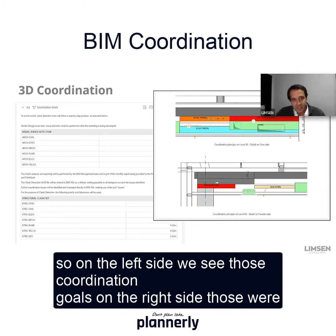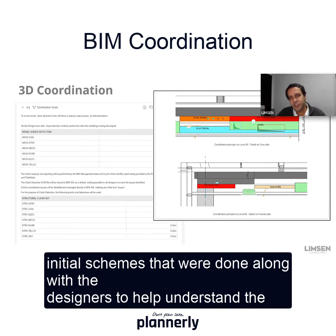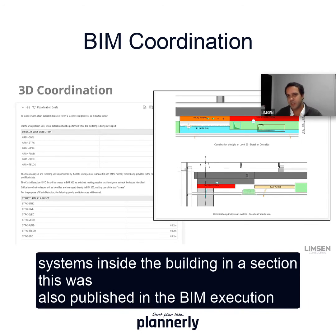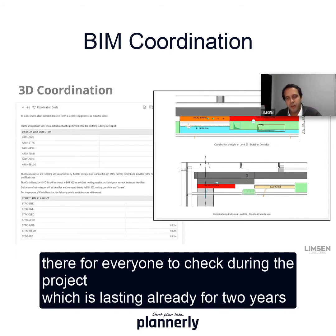On the left side, we see those coordination goals. On the right side, those were some initial schemes that were done along with the designers to help understand the levels and the placement in different areas of the project — of the different disciplines and the different systems inside the building in a section. This was also published in the BIM execution plan and was there for everyone to check.